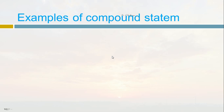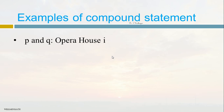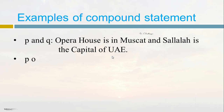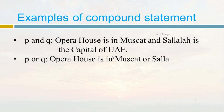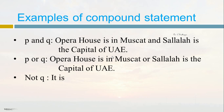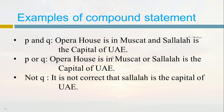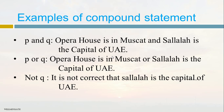Let us see some examples of compound statements. 'p and q' — where p is a primitive statement and q is a primitive statement; combining them with 'and' gives a compound statement: 'Opera House is in Muscat and Salalah is the capital of UAE.' Using 'or': 'Opera House is in Muscat or Salalah is the capital of UAE' — that is also a compound statement. The third case is negation: 'It is not correct that Salalah is the capital of UAE' — making the opposite, we call it a compound statement.